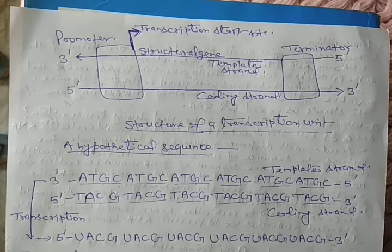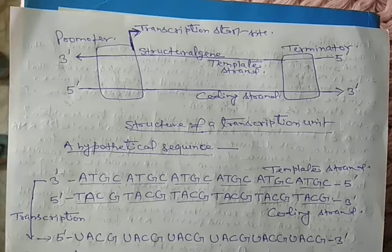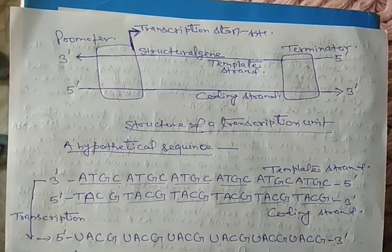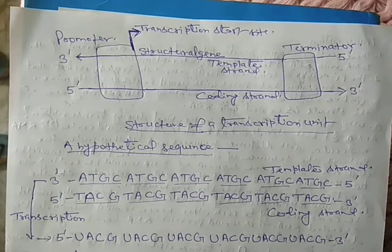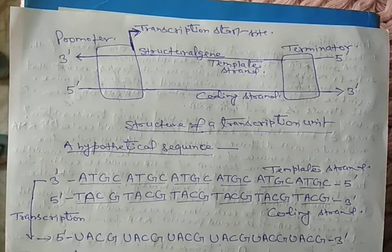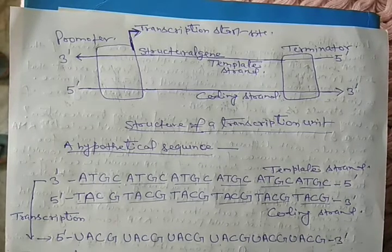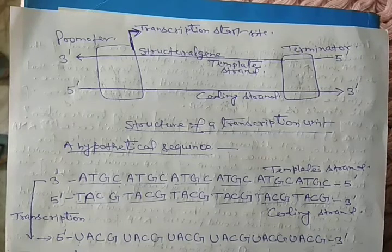In replication, as we studied, once replication starts, the whole DNA is replicated. But in transcription, only a segment of DNA is transcribed at a time, because different cells require different kinds of enzymes and different types of proteins at different times.